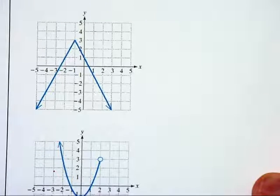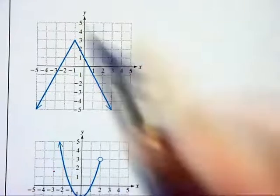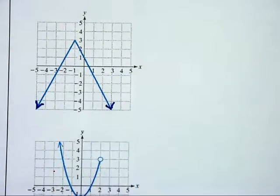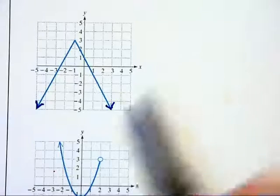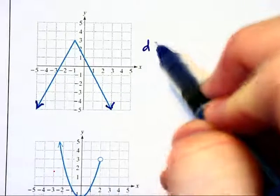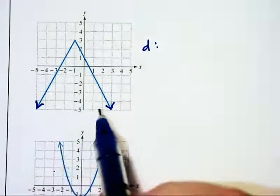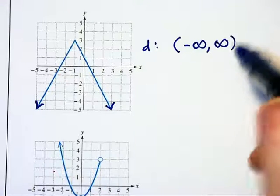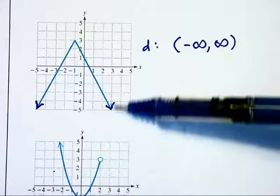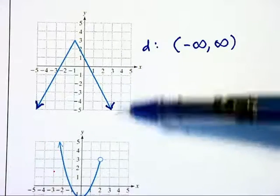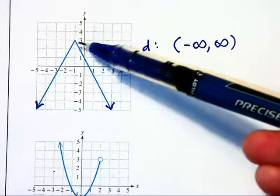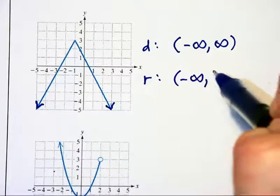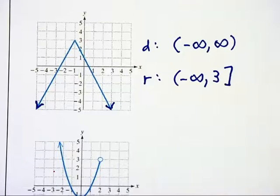Our next graph looks like an upside down V. I notice that there are arrows at the end saying that this pattern continues downward and to the left and right. So as far as the domain is concerned, this goes to the left forever and goes to the right forever. So the domain is all real numbers. As far as the range, looking at the graph vertically, it extends downward forever, but it seems to have a maximum value of 3. And so the range will be from negative infinity up to 3, which is included.